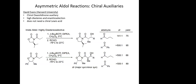This was pioneered by Dave Evans at Harvard — he was a phenomenal organic chemist. The auxiliary is this chiral oxazolidinone, and he attached the carbonyl moiety onto that. The alpha site is where your enolate is going to come from.